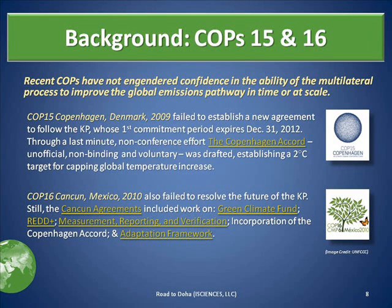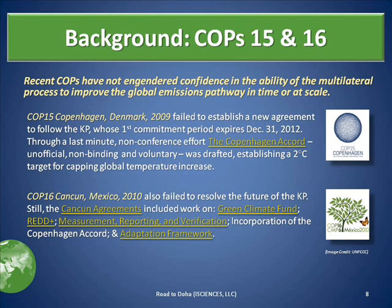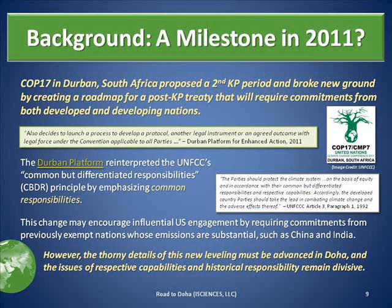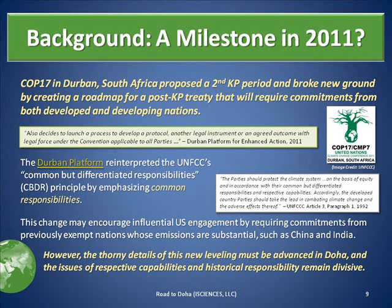Recent COPs have not engendered confidence in the ability of the multilateral process to improve the global emissions pathway in time or at scale. Both COP15 and COP16 failed to establish a new agreement that would follow the KP. The Voluntary Copenhagen Accord established a 2-degree target for capping global temperature increase. COP17 in Durban, South Africa, succeeded in proposing a second KP period and created a roadmap for a post-KP treaty that will require commitments from developing as well as developed nations. The thorny details of this new leveling must be advanced in Doha.